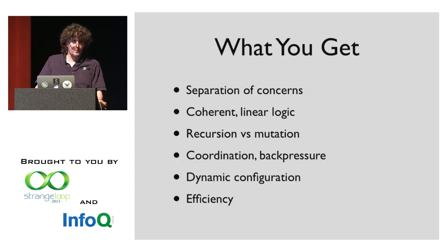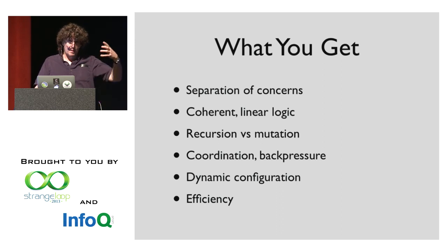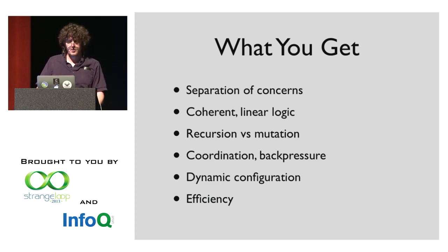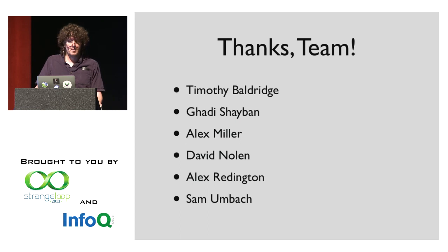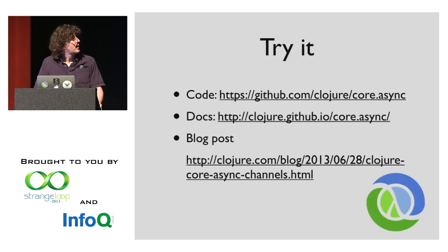What do you get from using this kind of technology? You get separation of concerns back, because you've lost it. You get coherent and linear logic. You move away from mutation — if you have a state machine inside your process, you can implement that using recursion instead of internal state with traditional measures. You get coordination, you can get backpressure, and you can dynamically reconfigure these networks. You can use your thread pools and thread resources efficiently. Timothy Baldridge did the go macro inversion of control work and it's really cool. The code is on GitHub, there are docs and a Maven artifact, and there's a blog post that describes it more.